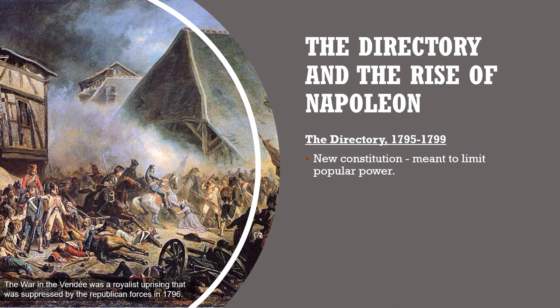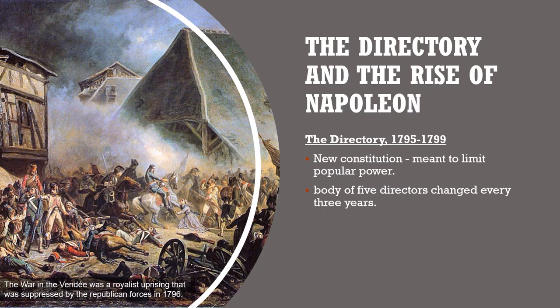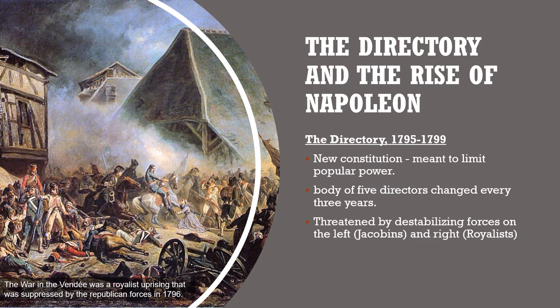After the Terror, the National Convention reorganized France one more time. With a new constitution, the government was renamed the Directory, beginning officially in 1795. This new constitution was meant to limit popular power to make sure there would never be another Terror. Under the new constitution, executive power was held not by just one person but by a body of five directors changed every three years. However, the underlying problems of the French Revolution hadn't gone away — there were still food shortages, foreign wars continued, and the Directory was threatened by the remnants of the Jacobins on the left and royalists on the right who wanted France to return to a monarchy. The government was very unpopular and increasingly reliant on military force to maintain order.